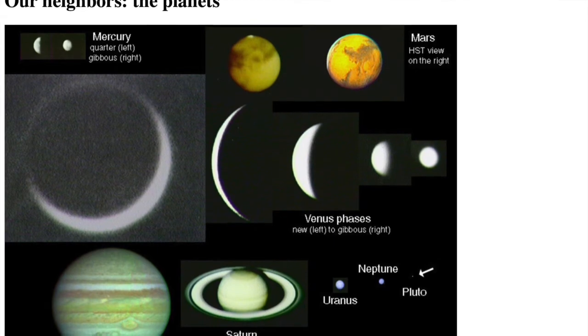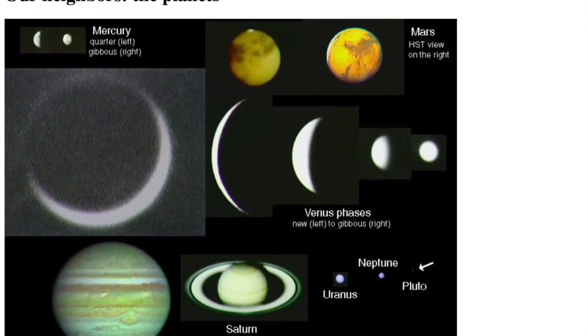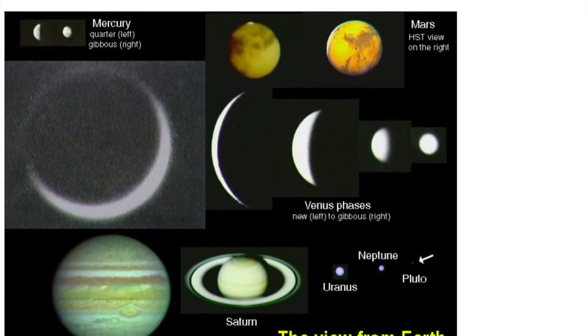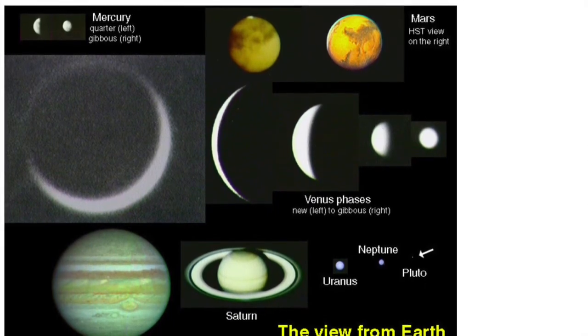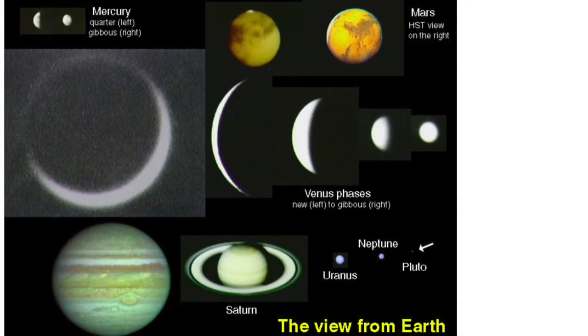I even include dwarf planet Pluto for the Pluto lovers, though I had to cheat with this since Pluto would actually be a third of a pixel in size. Since a pixel is the smallest thing you can have in a digital picture, Pluto is a full pixel here. Again, all of these are at the same magnification.